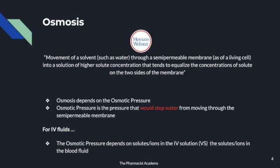Osmosis depends on osmotic pressure — the pressure that would stop water from moving through a semi-permeable membrane. When talking about osmosis, we're talking about water moving. Osmotic pressure controls how much water can move: if the osmotic pressure is high in one compartment, the water is not likely to move over. For IV fluids, the osmotic pressure depends on the number of solutes in the IV solution versus the ions in the blood fluid.